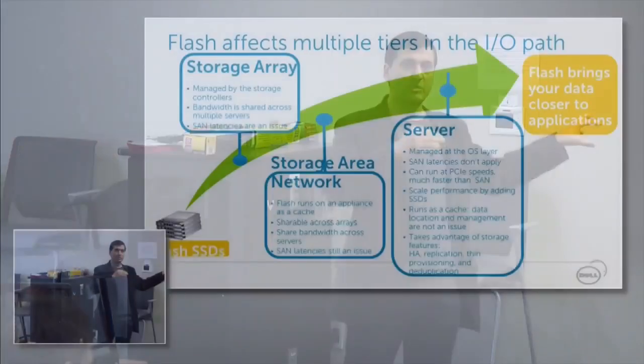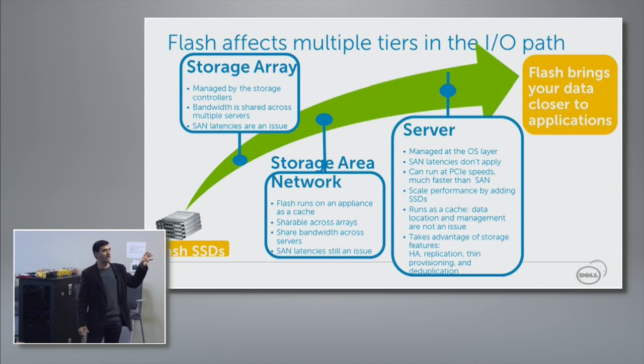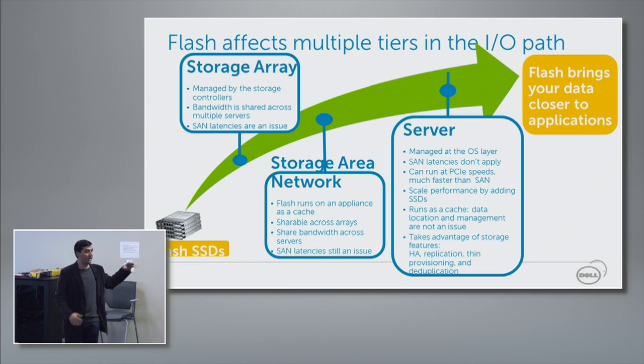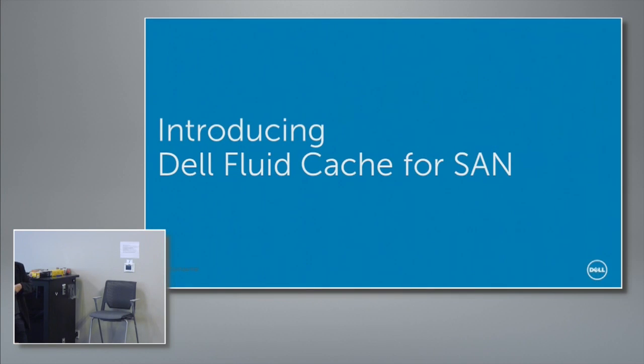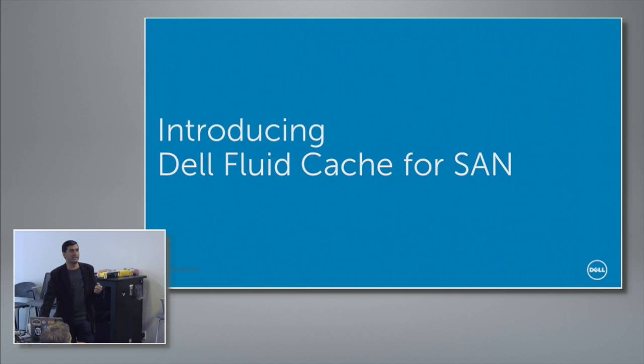Where do you put the cache? That's an important decision. If you put cache or flash inside the storage array itself, you're still bottlenecked by the SAN connectivity. You can move it up as a flash appliance, but there's still a bottleneck that grows as you scale compute. If you put flash in the server itself, you reduce those bottlenecks. So with Fluid Cache, we moved the flash into the server itself.